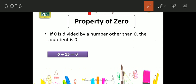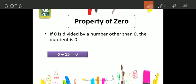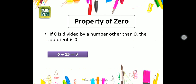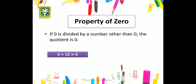Let's take another example: when we divide zero by 6,80,090, we get the result as zero.